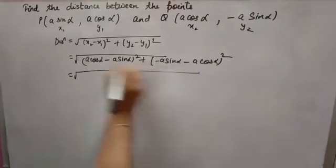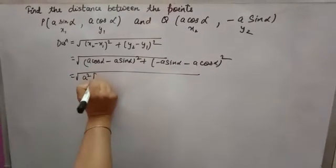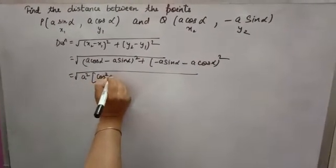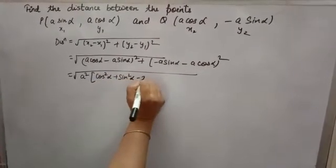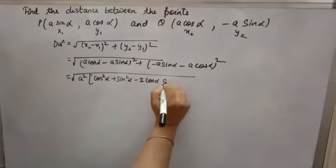Now a square you can take common. Here you will get cos square alpha plus sin square alpha minus 2 cos alpha sin alpha.